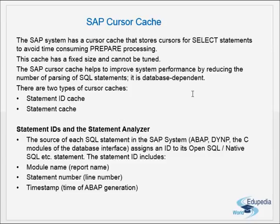We have two types of cursor caches. One is the statement ID cache and the other is the actual statement cache. For every SQL statement we have the ID cache which holds the statement ID, and second we have the actual statement cache.